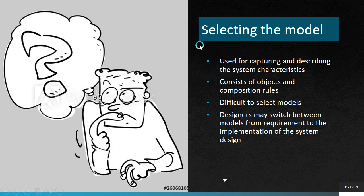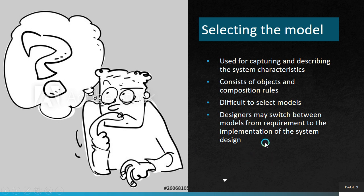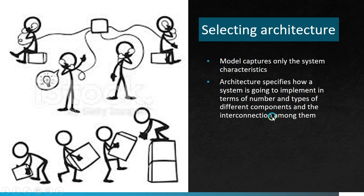The first issue is selecting the model. It is used for capturing and describing the system characteristics. It consists of objects and composition tools. It is difficult to select models because the designer may switch between models from the requirement phase to the implementation phase. In the requirement phase, we are identifying what the functionalities of the project are, and in the implementation phase we are adding components and understanding how operations work, so designers may switch between different models across phases.